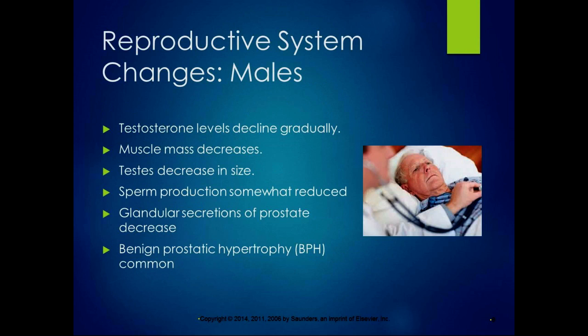With males, testosterone levels also decline gradually, leading to decreased muscle mass because testosterone helps build muscle mass. The testes decrease in size, sperm production is somewhat reduced, and glandular secretions of the prostate decrease. Benign prostatic hypertrophy is common, and that enlarged prostate can affect the urinary system and other systems as well.